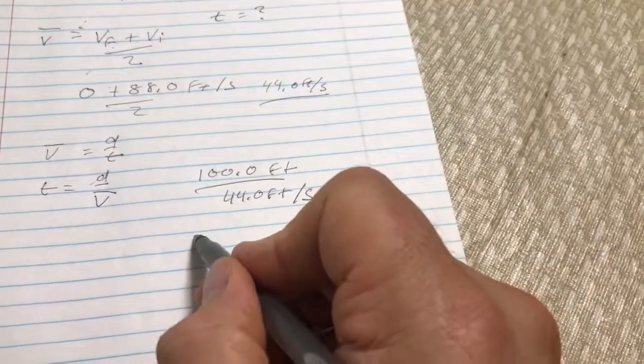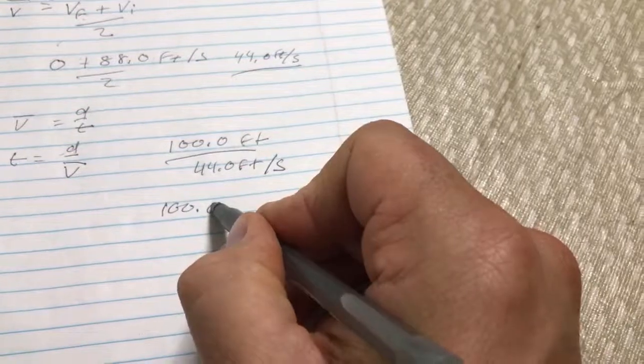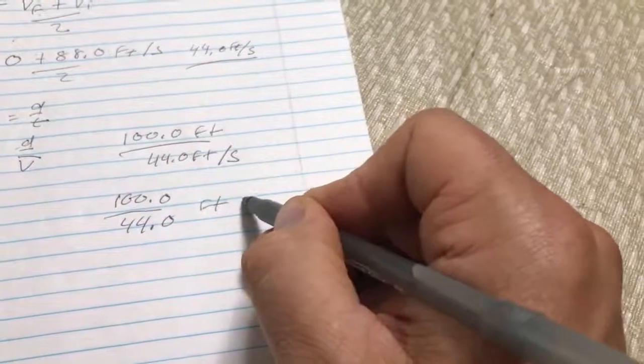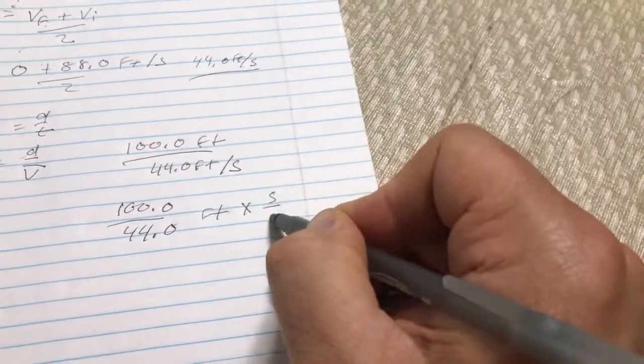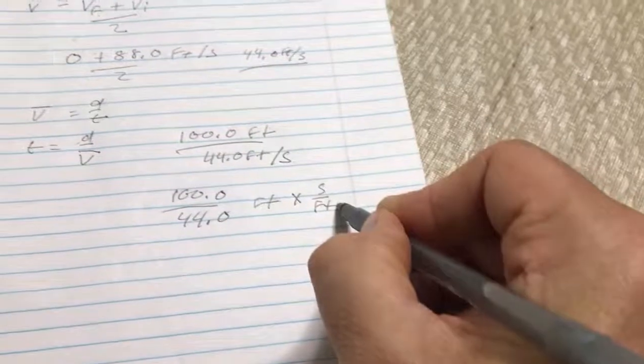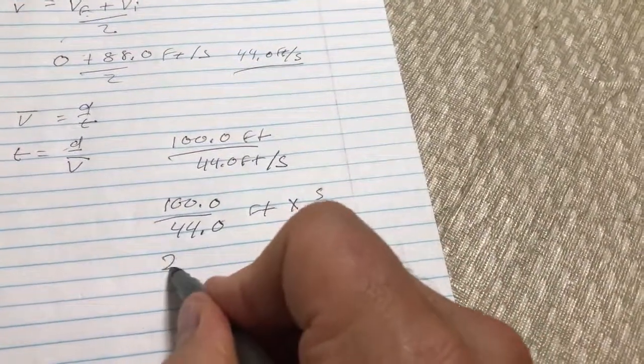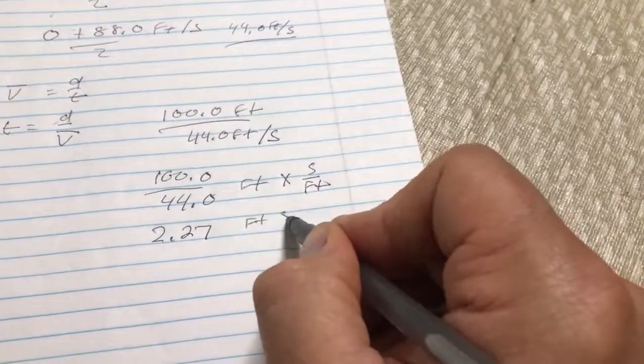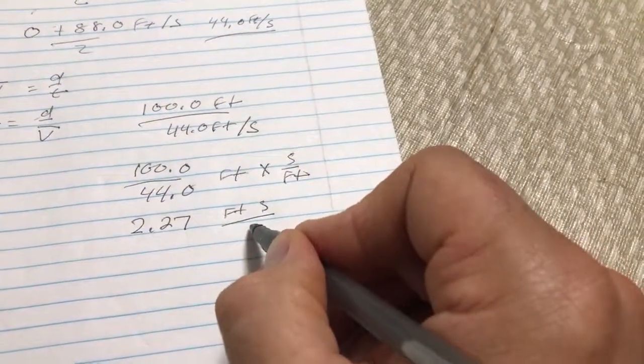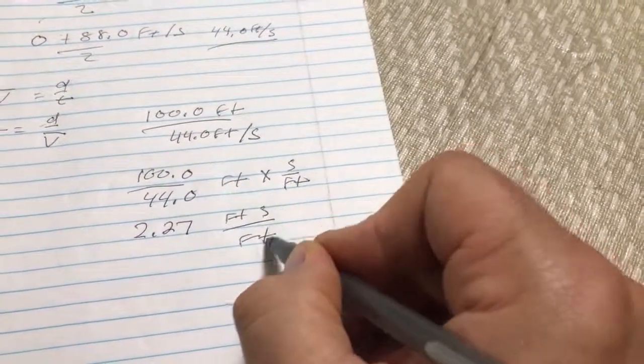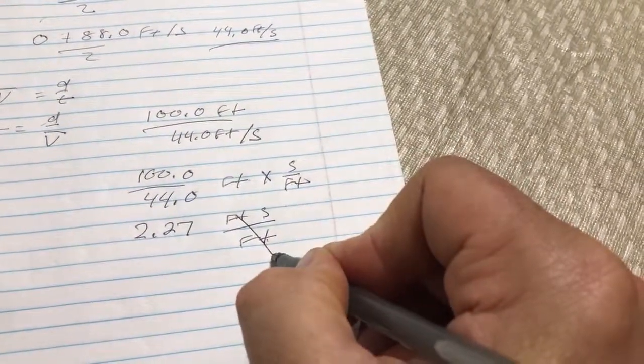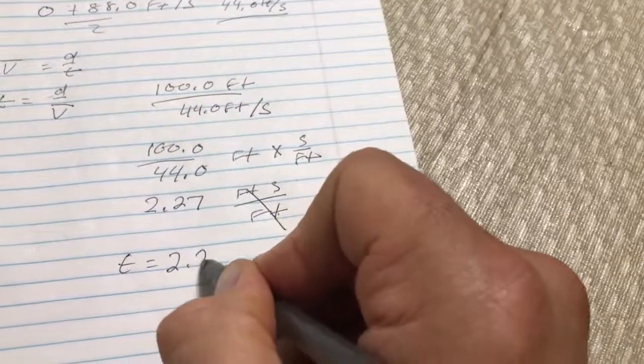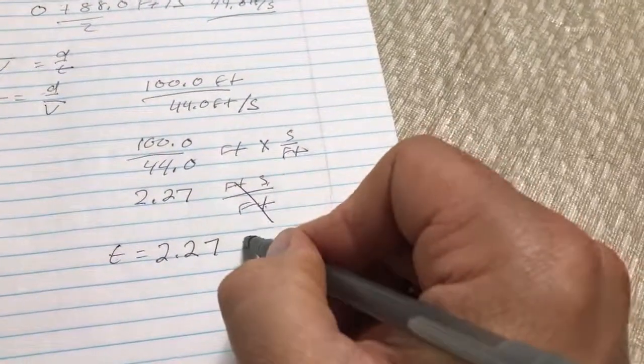So that would be what? 100.0 over 44.0 feet. Then divided that would be 2.27 feet per second over feet. Those cancel out. So time would equal 2.27 seconds.